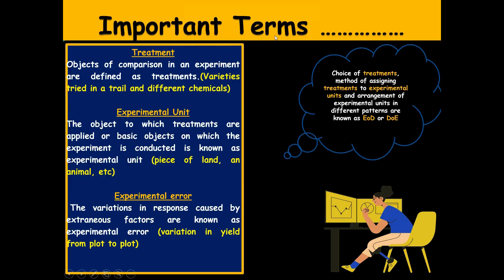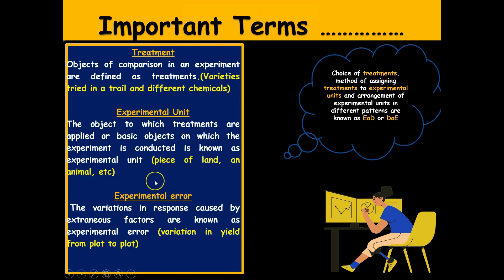There are some important terms involved in experimental designs. The first is treatment — the object of comparison in an experiment, such as different varieties or different chemicals. The second is experimental unit — the object to which the treatments are applied; it may be a piece of land, an animal, or a plant. The third is experimental error — the plot-to-plot variation in yield, or variation in response caused by extraneous factors beyond human control. Based on these three terms, the choice of treatment, method of assigning treatments to experimental units, and arrangement of experimental units in different patterns is known as experimental design.